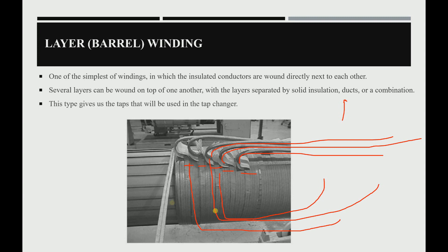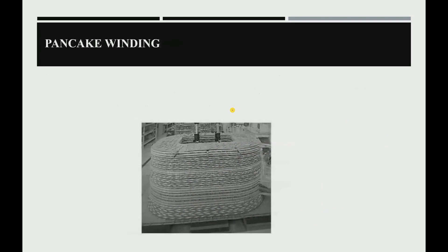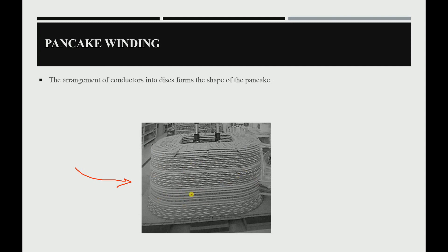This winding type also provides the tabs used in the tap changer, as mentioned. The last type is the pancake winding — named for its pancake-like shape. The conductors are arranged in disks stacked above each other, forming that shape. This type is used exclusively in shell-type transformers.